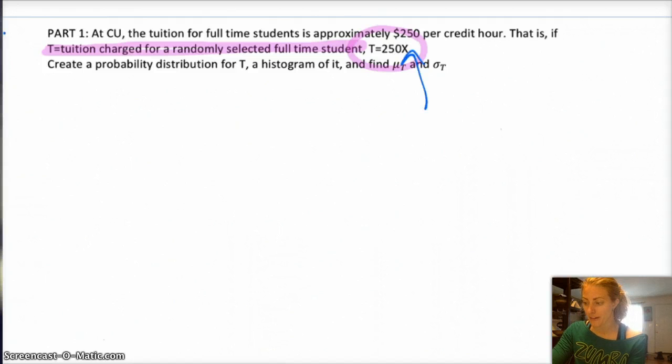Again, remember, x was the random variable, randomly selected student, number of credit hours, right? So, the tuition is 250 times the number of credit hours that they're taking, which makes sense, right? So, it says then create a probability distribution for t, a histogram of it, and then find mu and sigma.